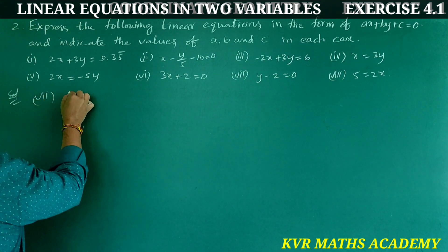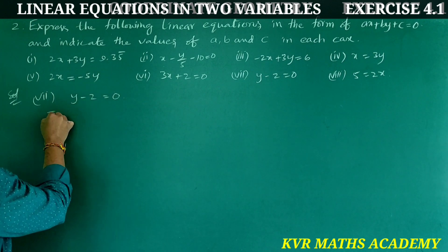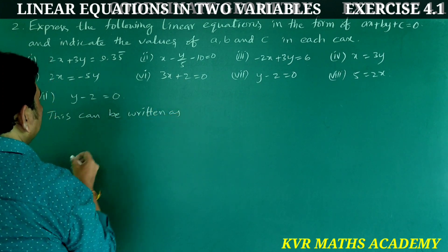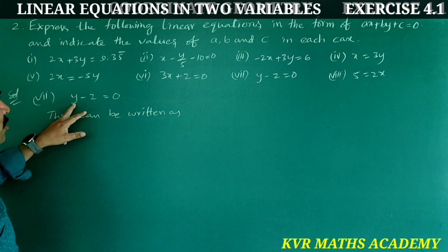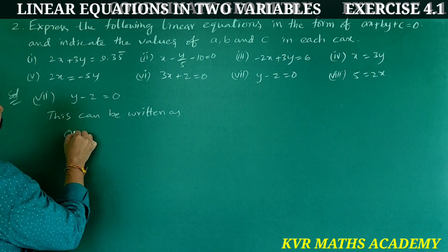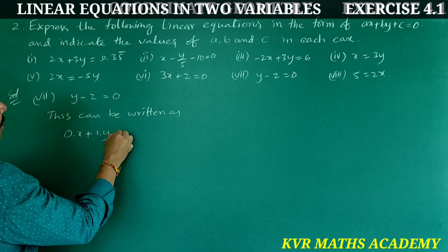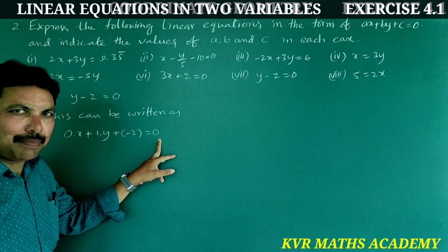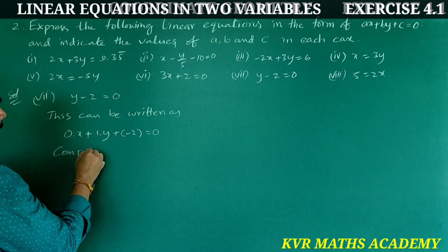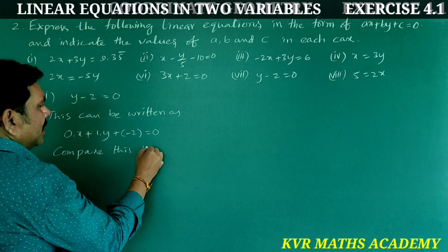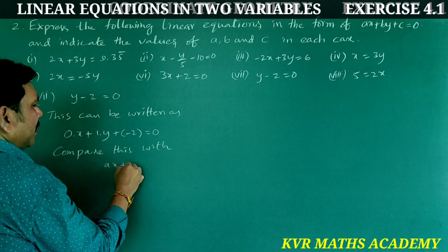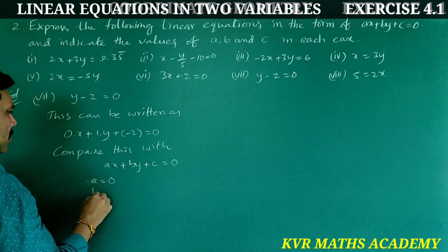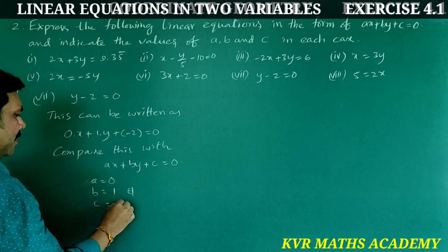Seventh: y − 2 = 0. Since there is no x term, this can be written as 0·x + 1·y + (−2) = 0. Comparing with ax + by + c = 0: a = 0, b = 1, and c = −2.